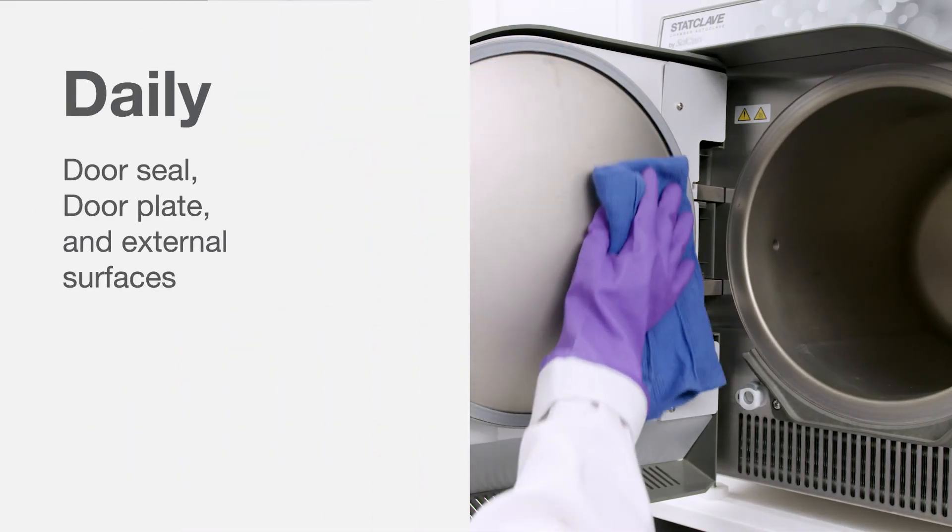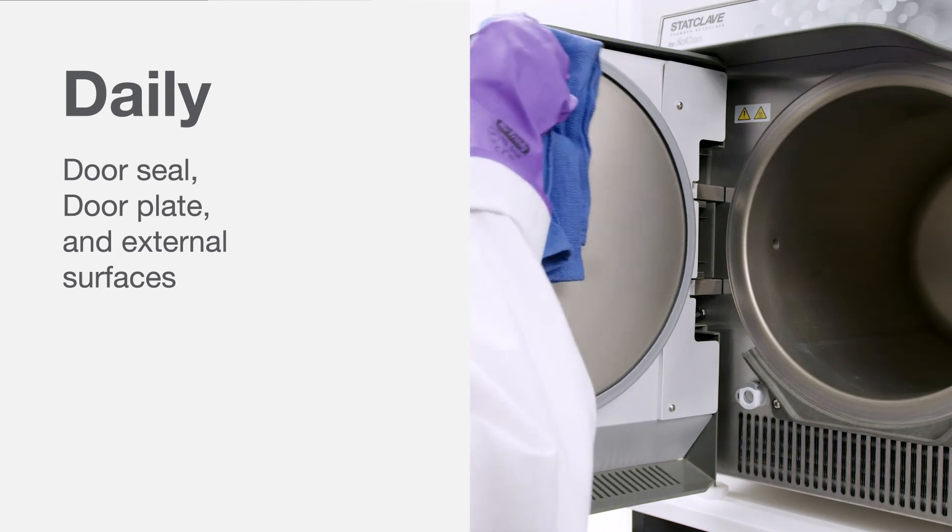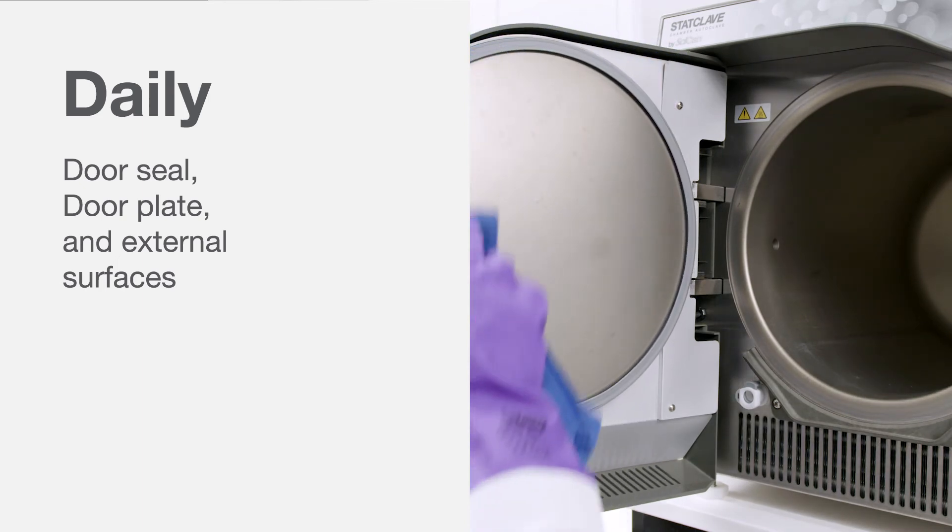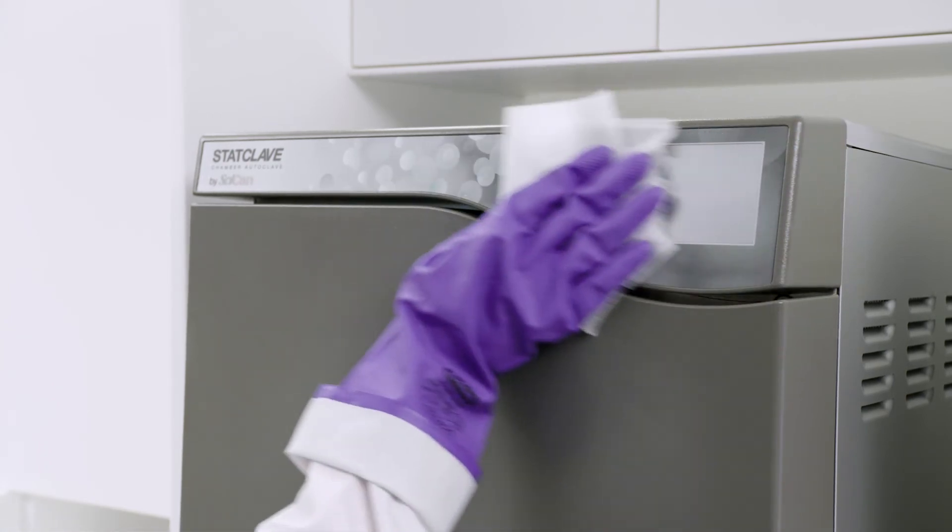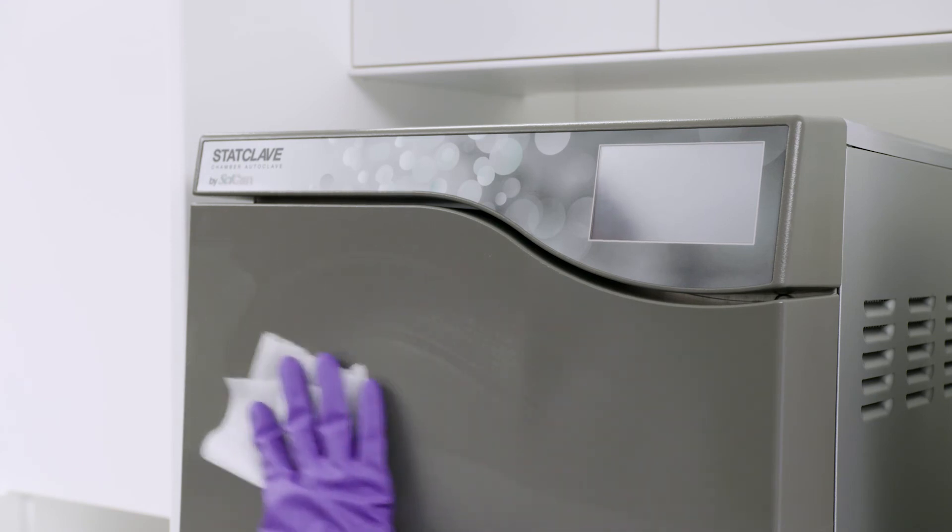The door plate, door seal and external surfaces should be cleaned daily with a damp, lint-free cloth. Clean all the StatClave's external parts using Optum wipes or a clean, lint-free cloth dampened with water and, if needed, a mild detergent. Dry the surfaces and remove any residue before powering on the unit.